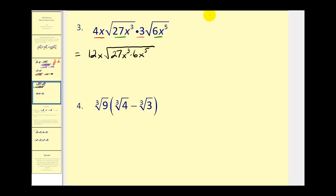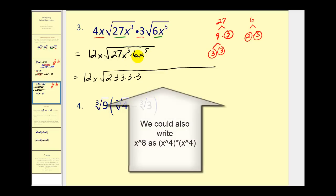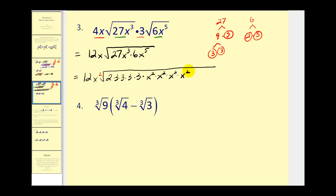Let's look at 27 first. 27 is equal to three factors of 3. And 6 is 2 times 3. So the prime factorization of 27 times 6 gives us one factor of 2 and four factors of 3. Next, x³ times x⁵ equals x⁸. Since our index is 2, we'll write x⁸ as x² times x² times x² times x² — we're always forming groups of two equal factors.